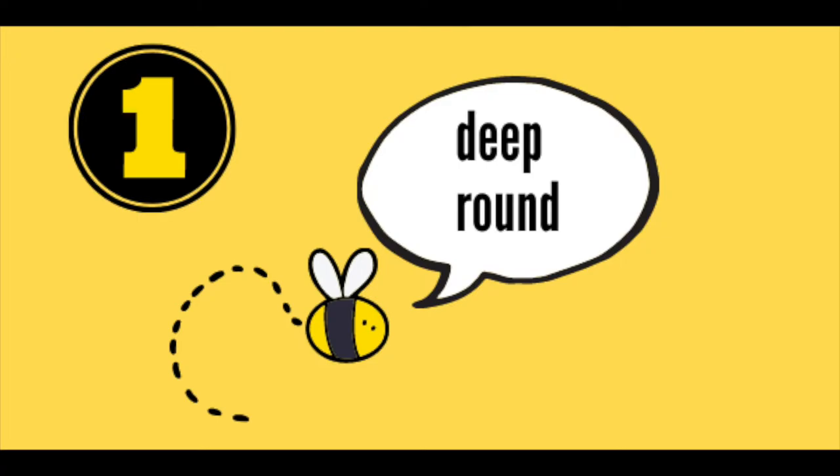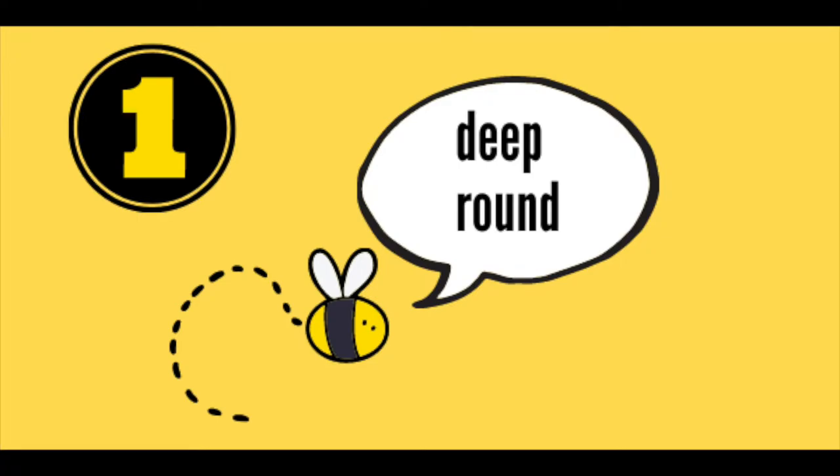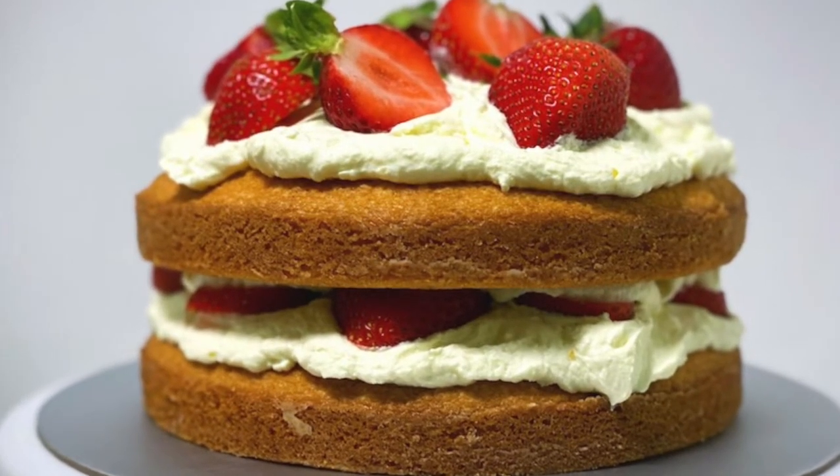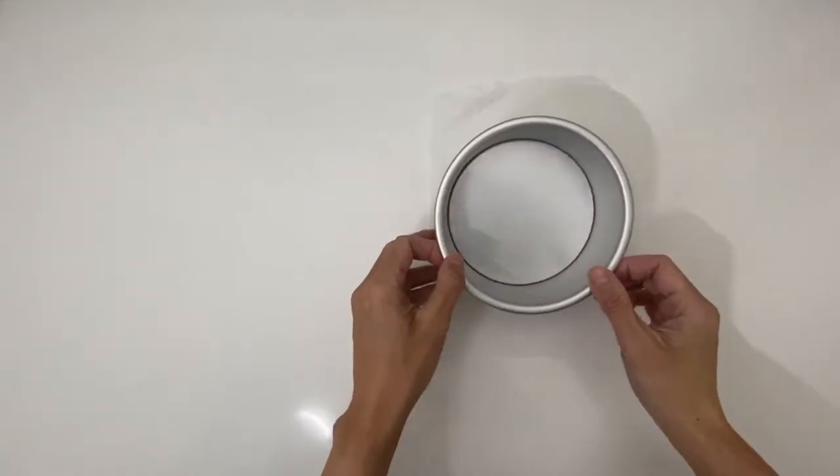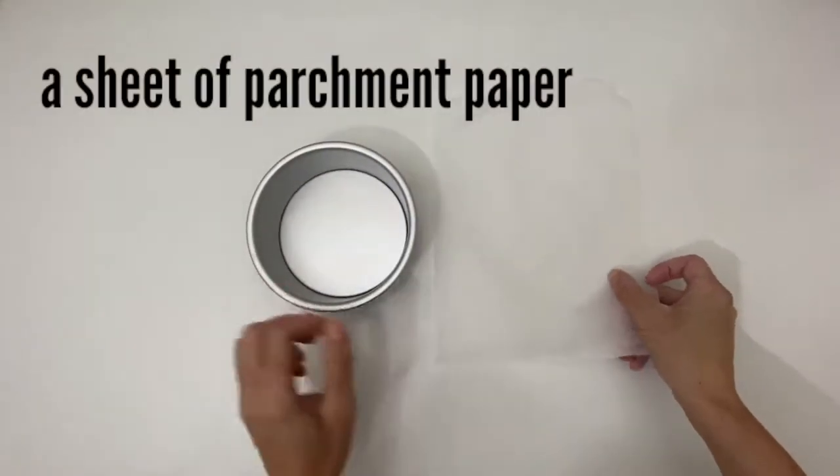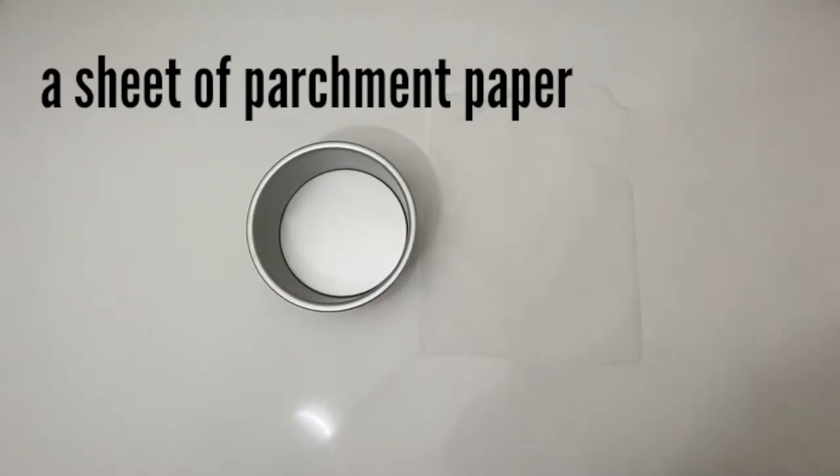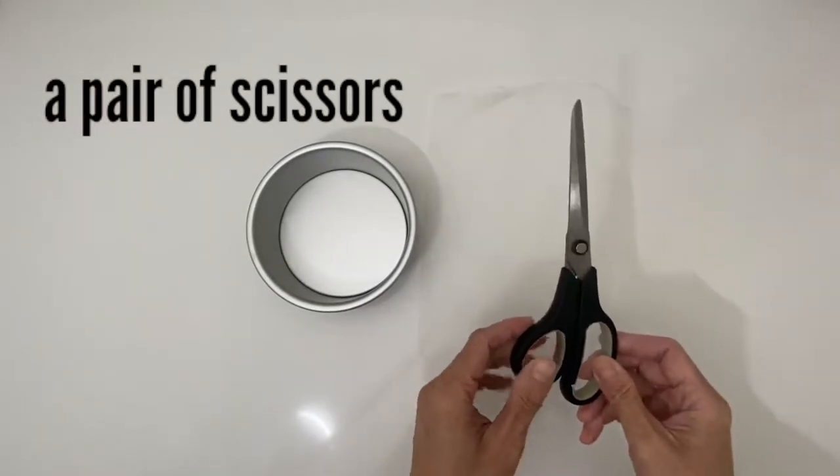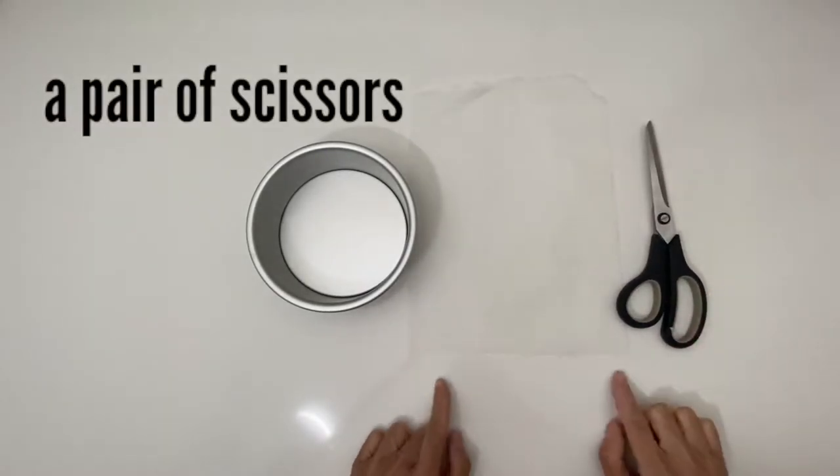Way number one, deep and round tins. I use it all the time to bake different cakes. Get a sheet of parchment paper which is slightly bigger than the baking tin and a pair of scissors. Then you are good to go!